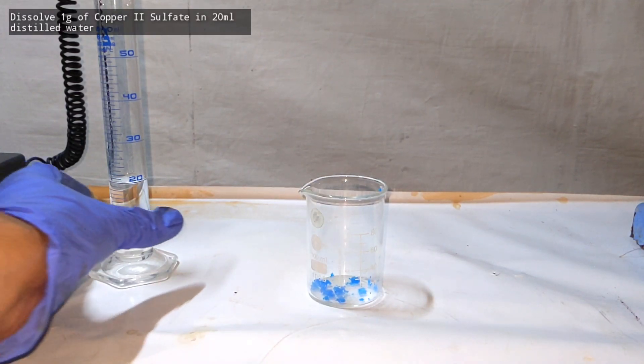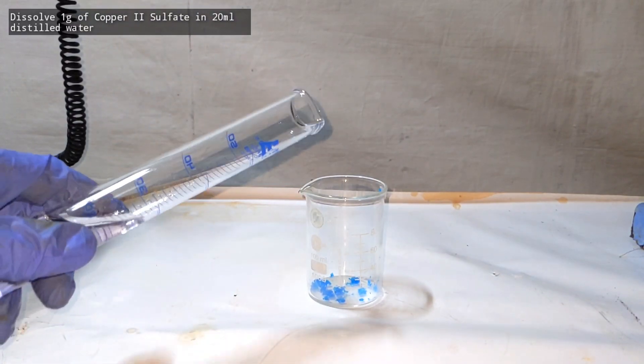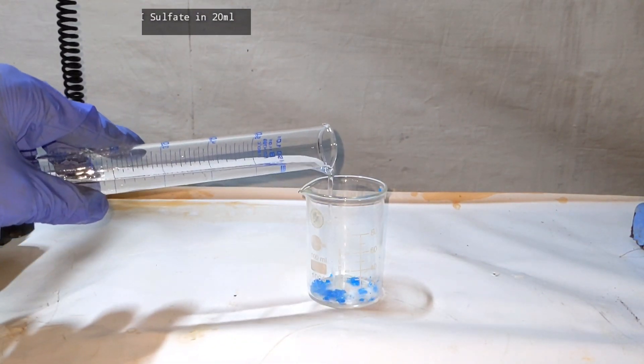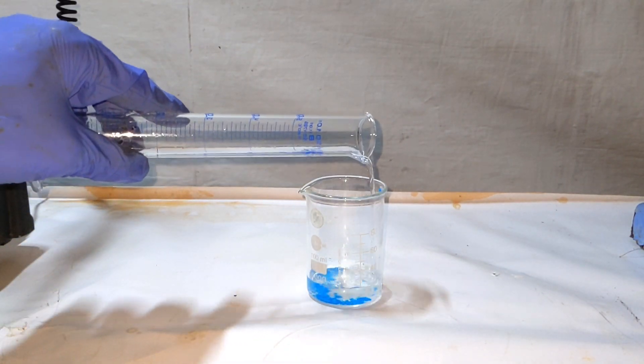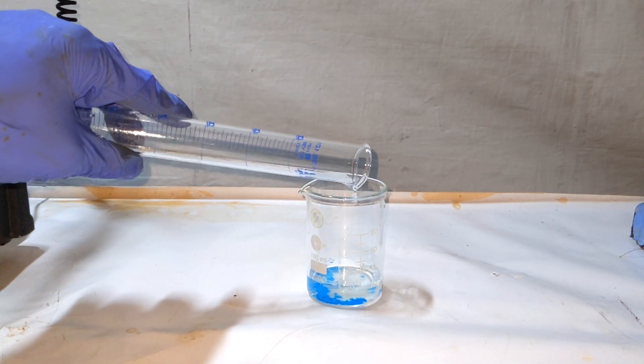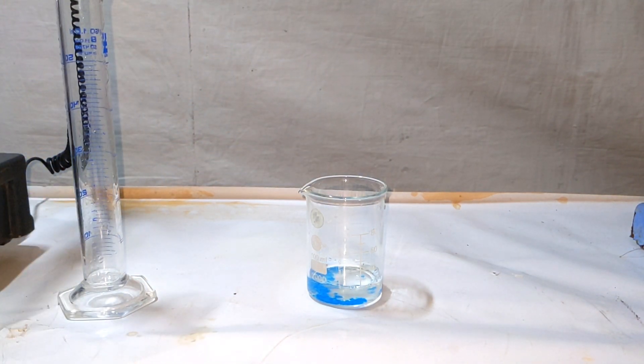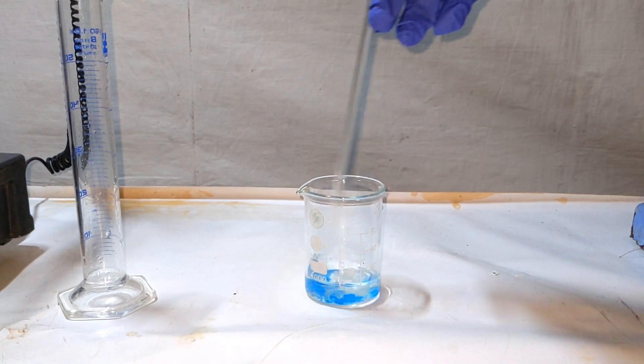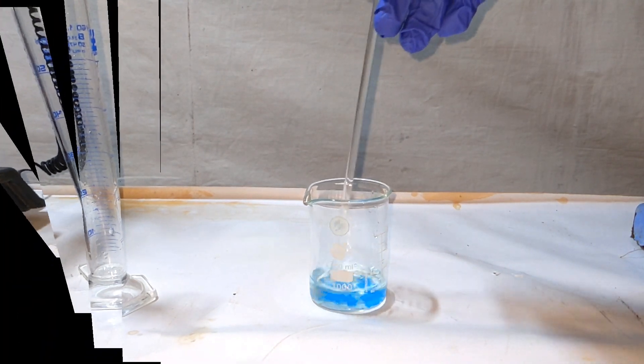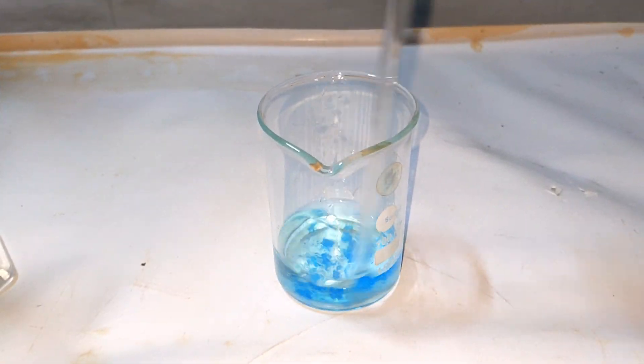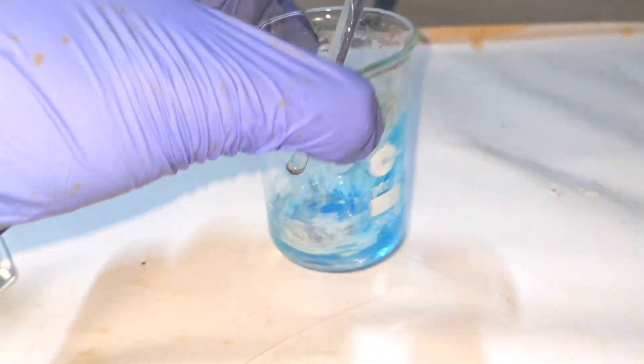Start by dissolving 1 gram of copper 2 sulfate pentahydrate in 20 milliliters of distilled water. Use a glass stirring rod to dissolve the contents. If you find the copper sulfate is difficult to dissolve in water, just heat the solution a little bit to make it dissolve completely.